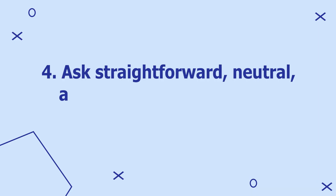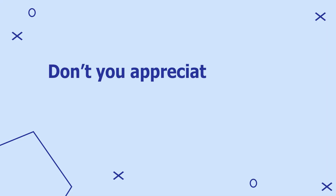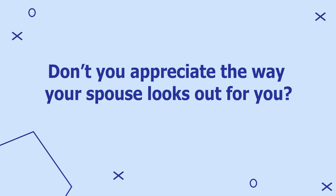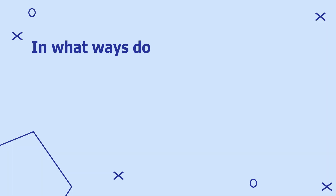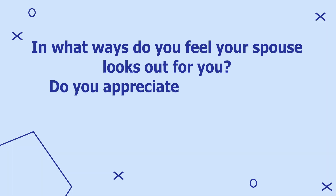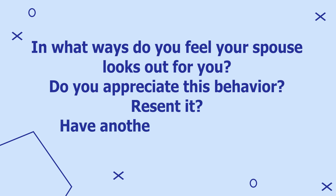Tip number four: ask straightforward, neutral, and non-leading questions. For example, rather than asking "don't you appreciate the way your spouse looks out for you," it's better to ask "in what ways do you feel your spouse looks out for you? Do you appreciate this behavior? Resent it? Do you have any other reaction? Why?"